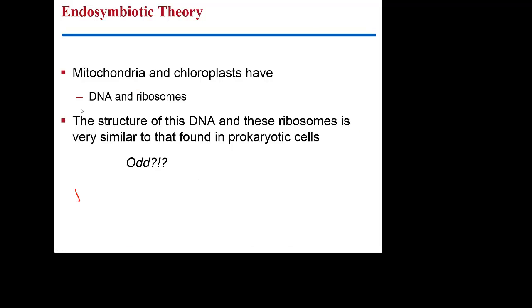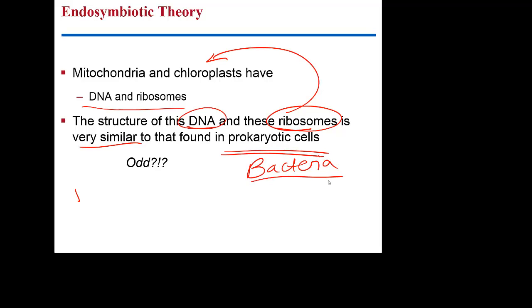They have their own DNA and ribosomes I mentioned to you. And the idea is the structure of the DNA and the structure of the ribosomes found in the mitochondria and the chloroplasts are very similar to that found in bacteria. We do not see mitochondria and chloroplasts in bacteria. They don't have them. The only place we find mitochondria and chloroplasts are in eukaryotic cells. So why would they look like a prokaryote?